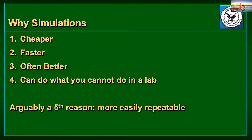The quintessential question of why do we do something — as computers advance, this all becomes cheaper, becomes faster, and the computer can often do a lot of things better. But there are some caveats I'll talk to in a bit. You can do what you cannot do in a lab sometimes with a simulation. It's often more repeatable with a computer-based simulation because we control all the variables and all the inputs. We control what the random inputs are.